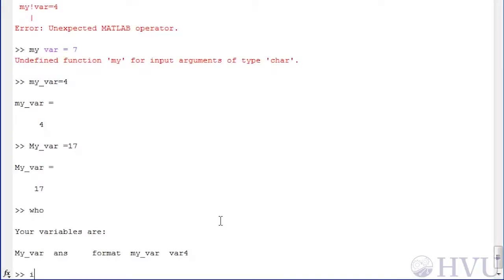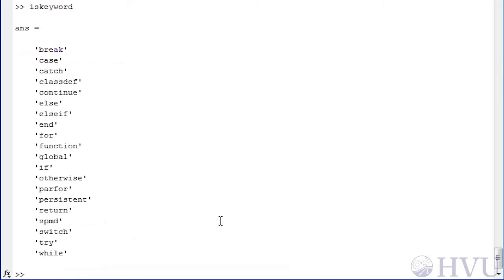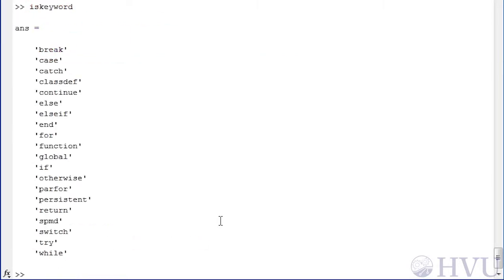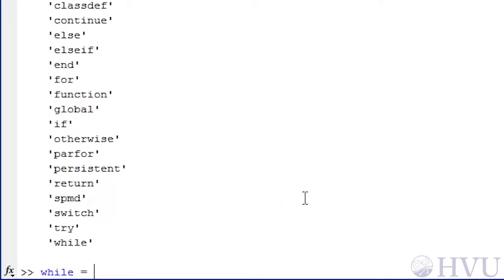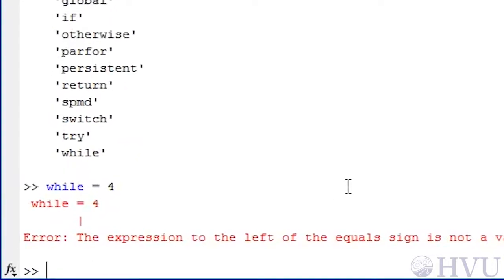Let's type iskeyword at the command prompt. None of the words on this list can be used as variable names. For example, if I try to assign the value 4 to a variable named while, MATLAB gives me an error message.